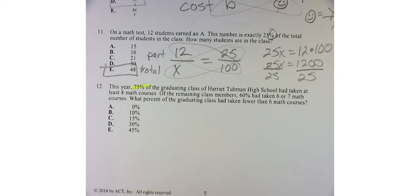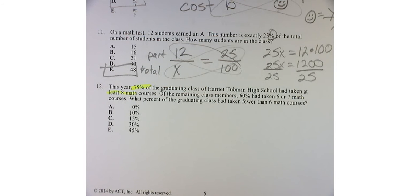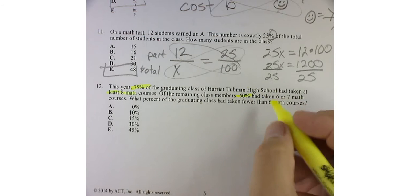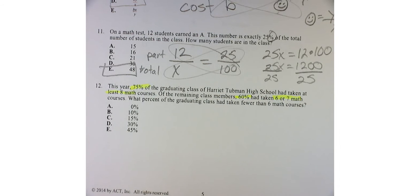had taken at least eight courses. And the remaining class members, 60%, had taken six or seven. So, of the remaining, 60% had taken six or seven math courses. What percent of the graduating class had taken fewer than six math courses?